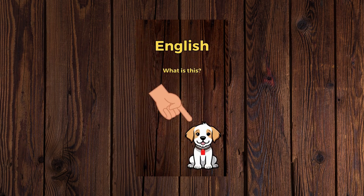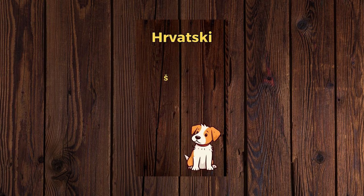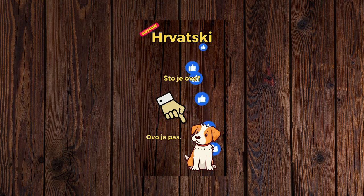What is this? This is a dog. Što je ovo? Ovo je pas.